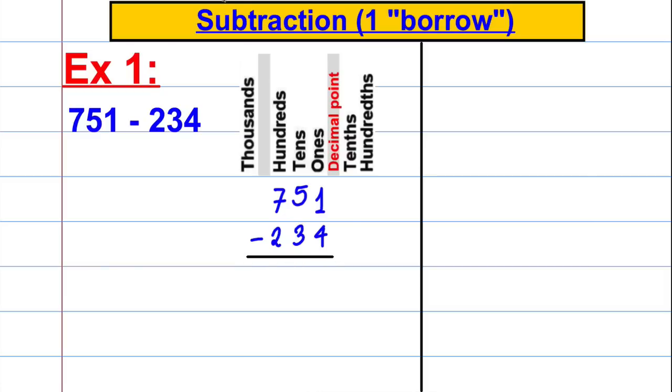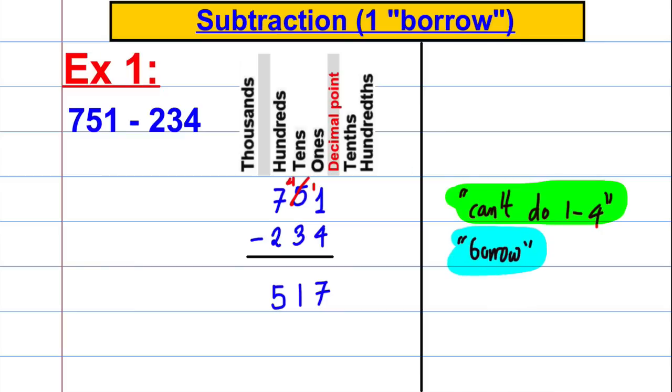Students would usually write it in a column method. They would put a line underneath and then they might say something like 1 subtract 4 you can't do. So then they would say we need to borrow from the tens column. They might cross that out and change that to 4 tens and put one of the tens here in the ones column. So now we have 11 subtract 4 which is equal to 7. Now we've got 4 tens subtract 3 tens which is 1 ten, and 7 hundreds subtract 2 hundreds which is equal to 5 hundreds.